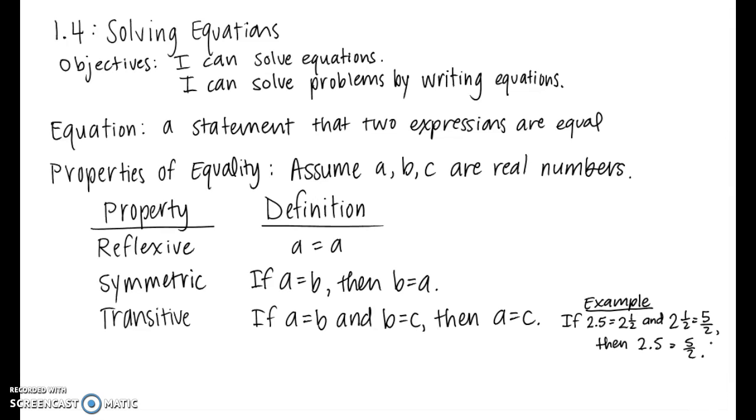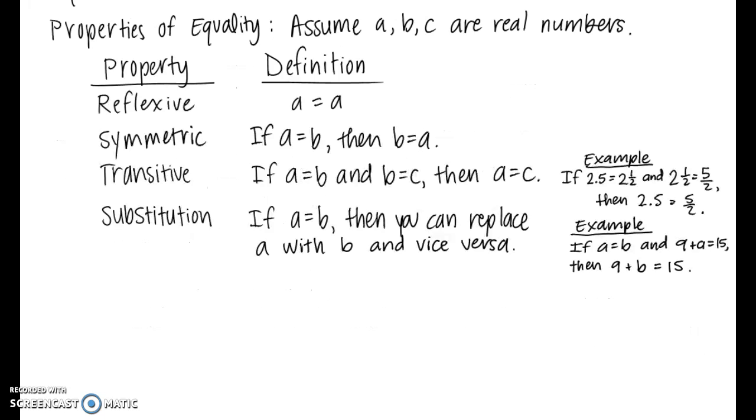Substitution is another property. This property says that if a equals b, which means they equal each other, then you can replace a with b and vice versa. The example shown at right: if we know that a and b are the same value, and we also know that 9 plus a is equal to 15, then that means 9 plus b is also equal to 15. Hopefully you're familiar with all four of those properties. We did use them in geometry.